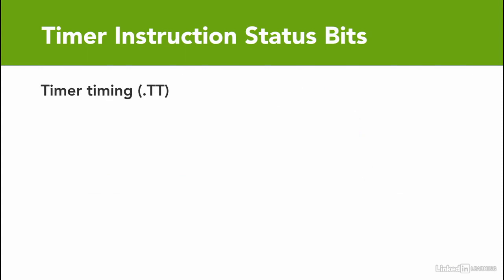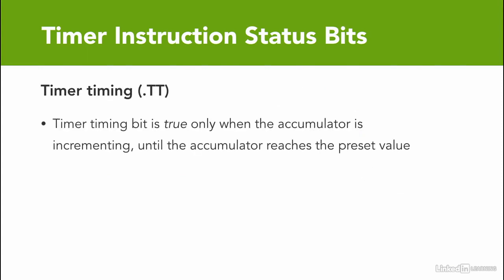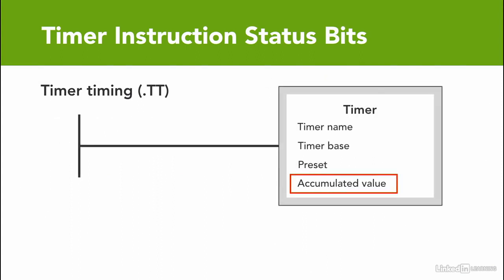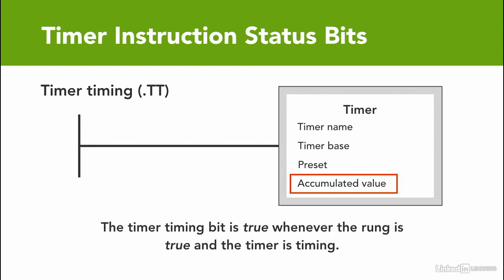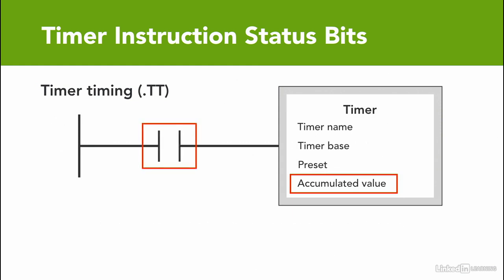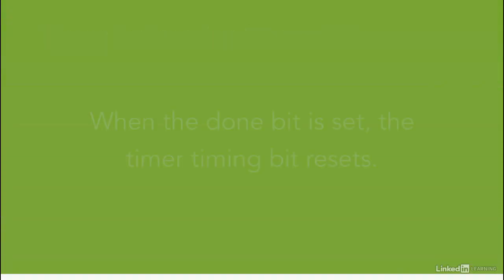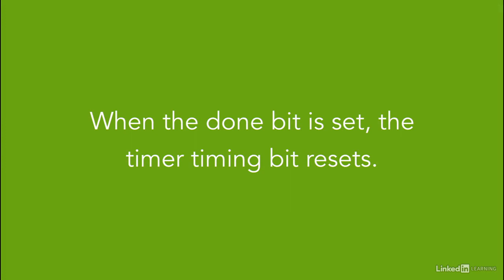The second bit is the timer timing bit. This bit is true only when the accumulator is incrementing — that is, whenever the rung input is true and the accumulated value is less than the preset value, while the timer is timing. When the timer done bit is set, the timer timing bit resets.